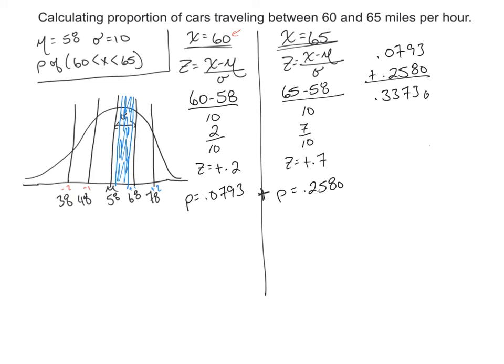Or in percentages, 33.73%. So what I can say is that about a third of the cars were traveling between 60 and 65 miles per hour.